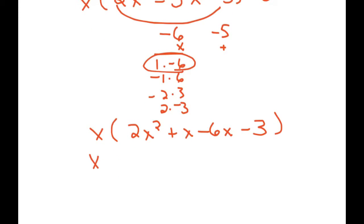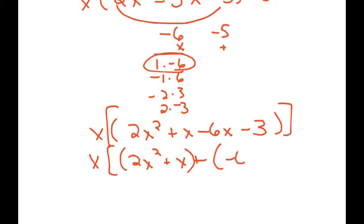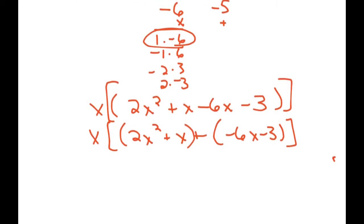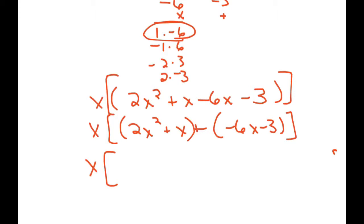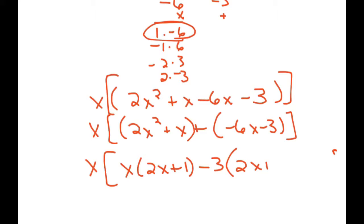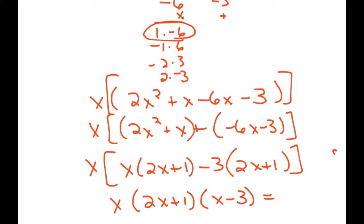And then we're going to use a process called factor by grouping. The x we took out at the beginning of the problem is going to be there at the end of the problem, so you just ignore it for a minute. We group the first two terms together, and then we group the next two terms together, and now we factor again. The first group, I can factor out an x, and I'm left with 2x plus 1. In order for factor by grouping to work, whatever you factor out of the second group better give you a remainder of 2x plus 1. Since they're both negative, I'm going to factor out negative 3. When I divide them both by negative 3, I'm left with 2x plus 1. Now 2x plus 1 is one of the factors, and the other factor is x minus 3. So that's my factored form.